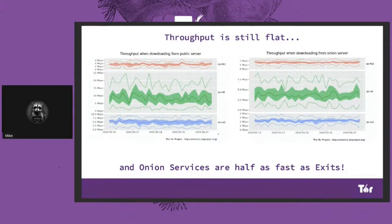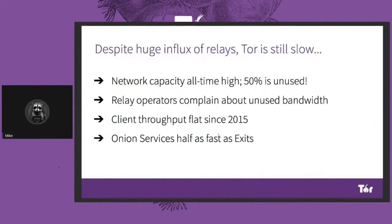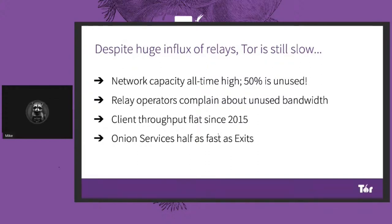There are quite a few strange things going on in the Tor network that we're going to aim to fix. Despite a huge influx of Tor relays, Tor is still slow. Network capacity is at an all-time high but 50% of it is unused. Relay operators tell us they're trying to run fast Tor relays — if they put a gigabit relay up they're not able to use all that throughput. Client throughput has been flat since 2015; clients just aren't getting faster even though more capacity is being added, and onion services are half as fast as exits.